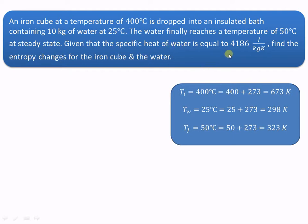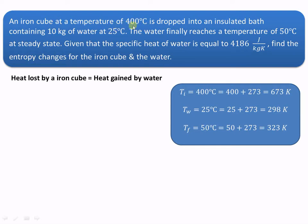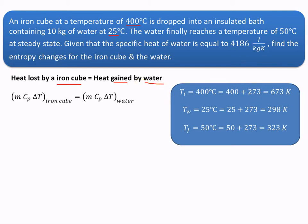The specific heat of water is 4186 J per kg Kelvin, and we have to find the change in entropy for the iron cube and for the water. Since the iron cube is at a higher temperature, heat will be lost by the iron cube and gained by the water. Therefore, MCP·ΔT for the iron cube must equal MCP·ΔT for the water.